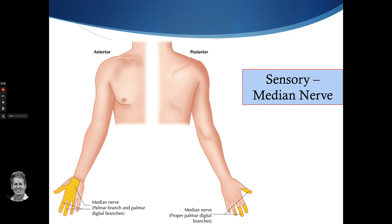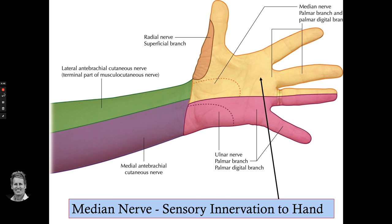For the sensory distribution on the palmar surface — the thumb, index, middle, and half the ring finger — there's a small patch from the radial nerve in this area. But it's mainly the palmar digital branch that supplies sensation along here and also to the dorsal nail beds. So if someone has tingling or altered sensation in that area, the median nerve coming from the carpal tunnel may well be involved.